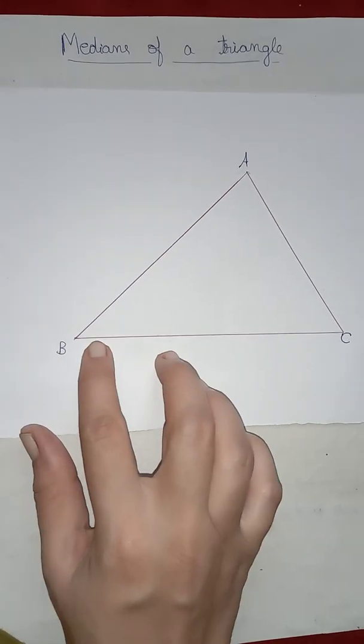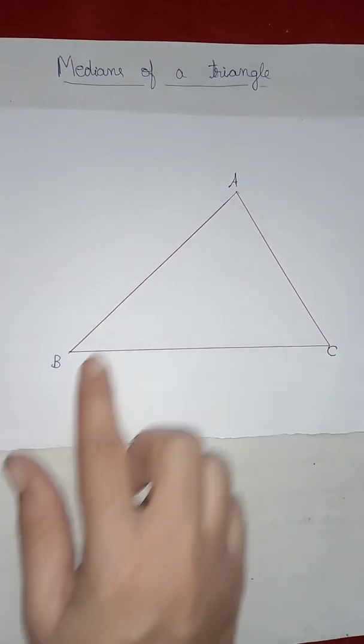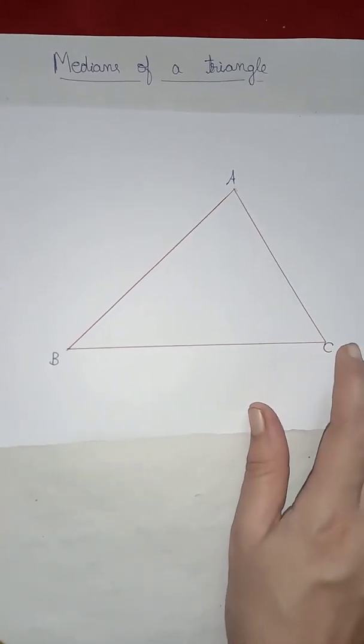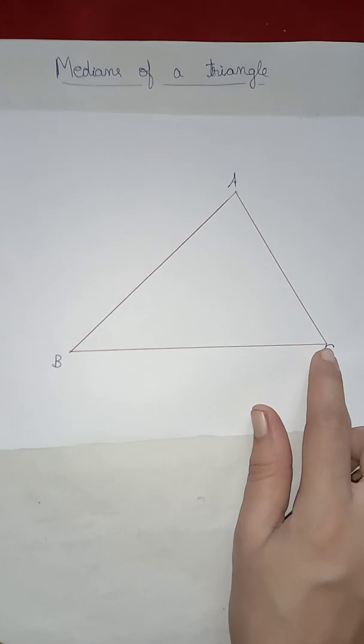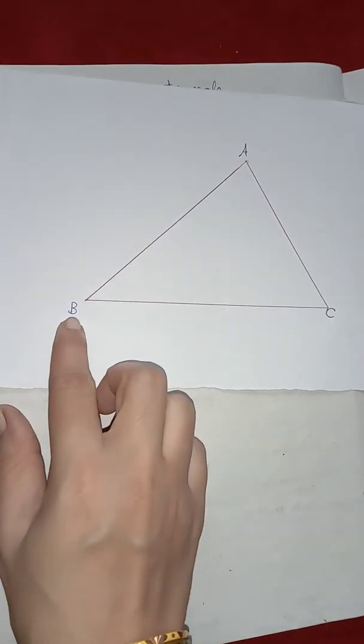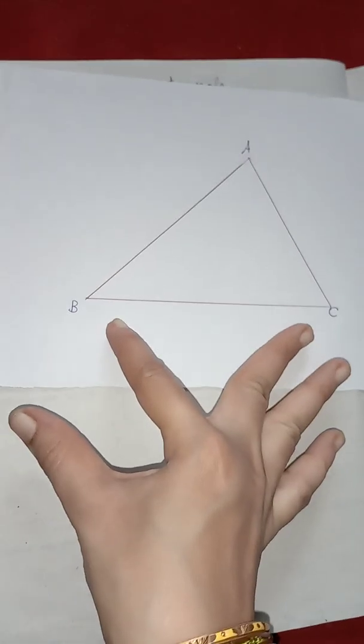So, let us see a working model. We have a triangle A, B, C. Now, how to draw a median for this triangle? See, you have two points. You have to draw a median for side B, C.